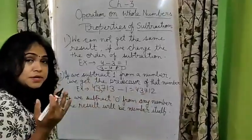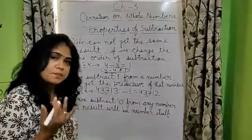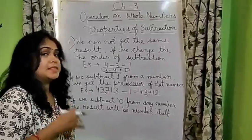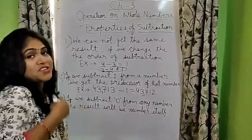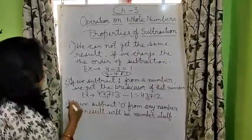And this is predecessor of 43,713. Predecessor is what? The number which is just before the given number. And that is called predecessor. And successor is the number which is coming just after a given number.